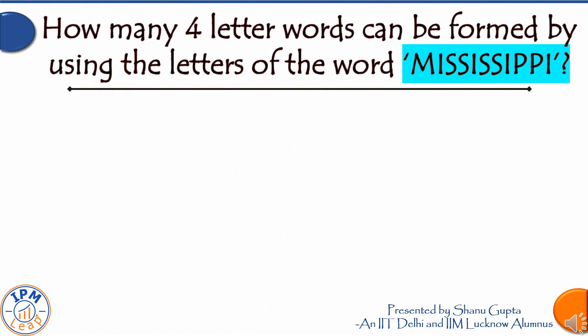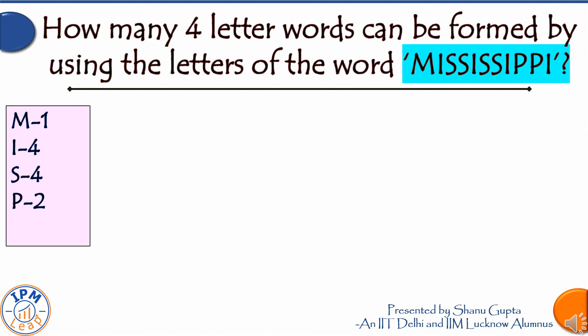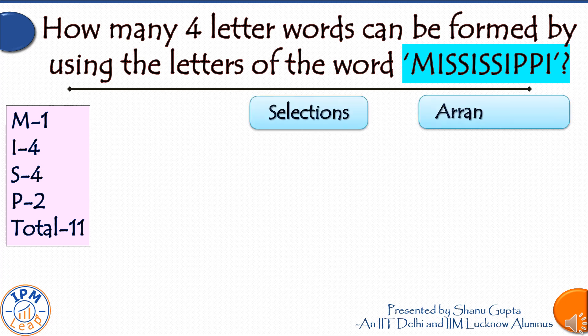One more very important question often asked for such words: how many four-letter words can be formed using the letters of the word Mississippi? To solve this, we first select four letters from the given eleven letters. The four letters we select need not all be different — there could be various possibilities, like selecting two alike and two different. Once we have clarity about what four letters we have selected, we can then determine the number of arrangements of those four letters. Let's list all possible cases.